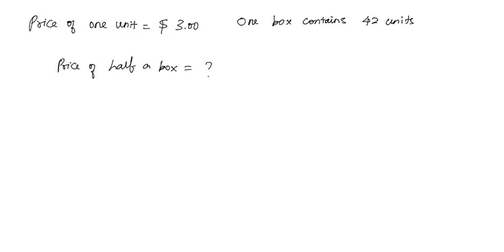In the above problem, the price of one unit of your product is $3 and one box contains 42 units of the same product. We have to find the price of half of a box.